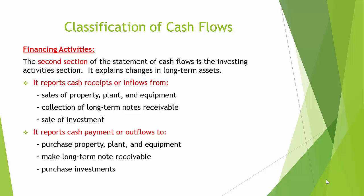The second section of the statement of cash flows is the investing activities section. It explains changes in long-term assets. It reports cash receipts or inflows from sale of property, plant and equipment, collection of long-term notes receivable, and sale of investments. It reports cash payments or outflows to purchase property, plant and equipment, make long-term notes receivable, and purchase investments.